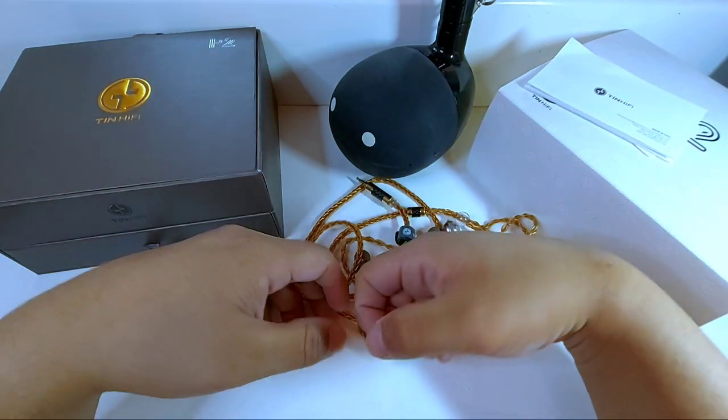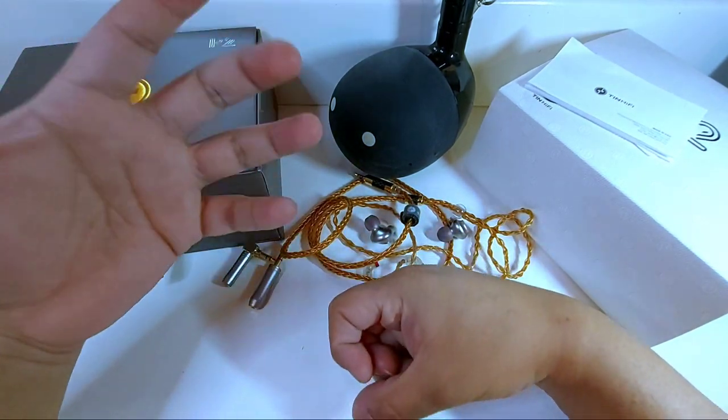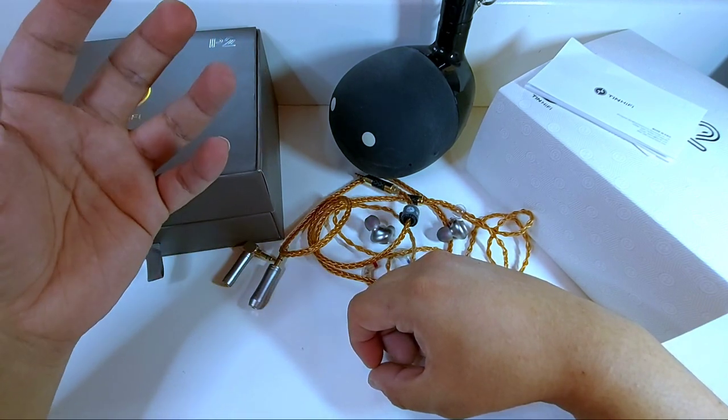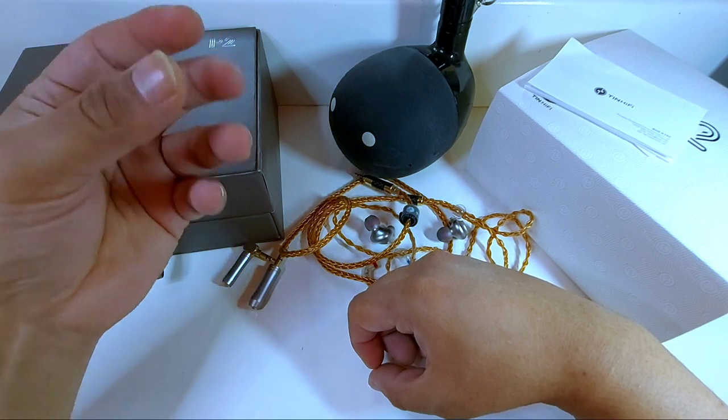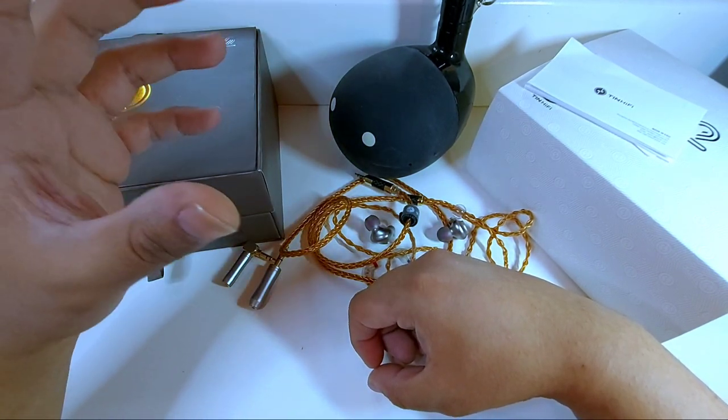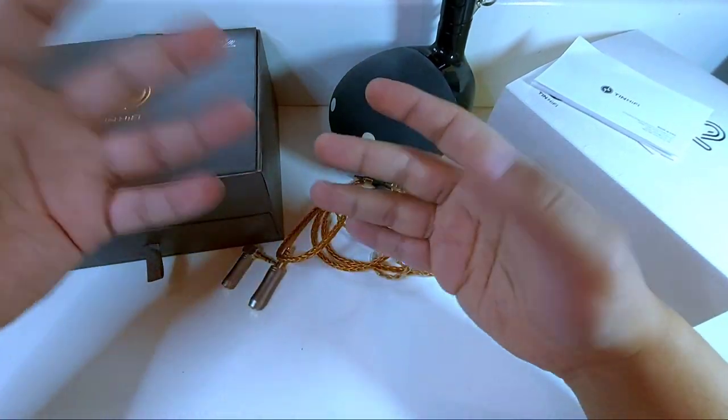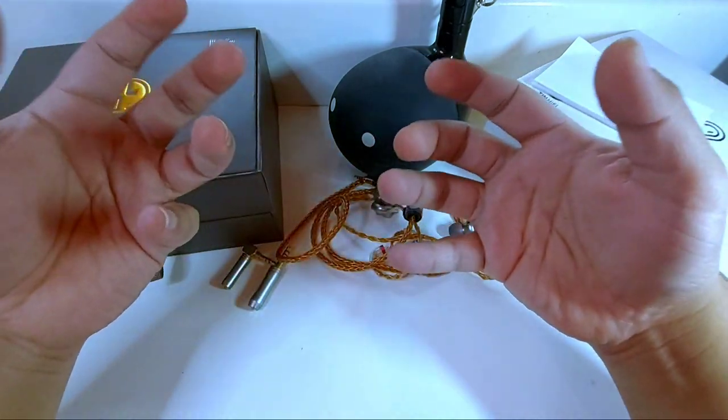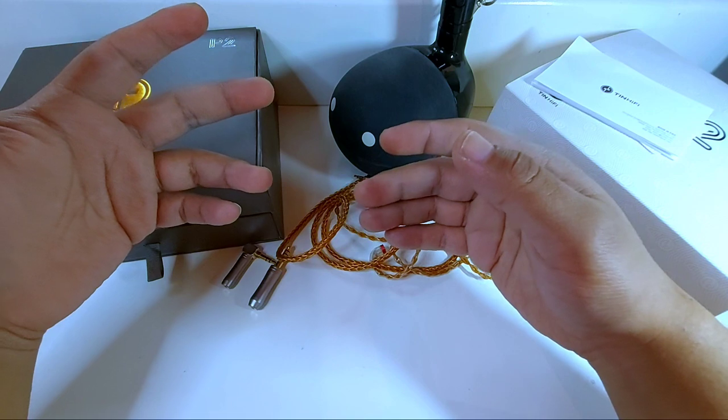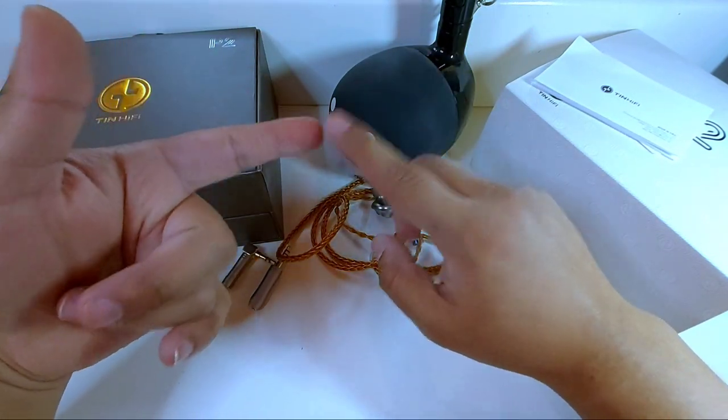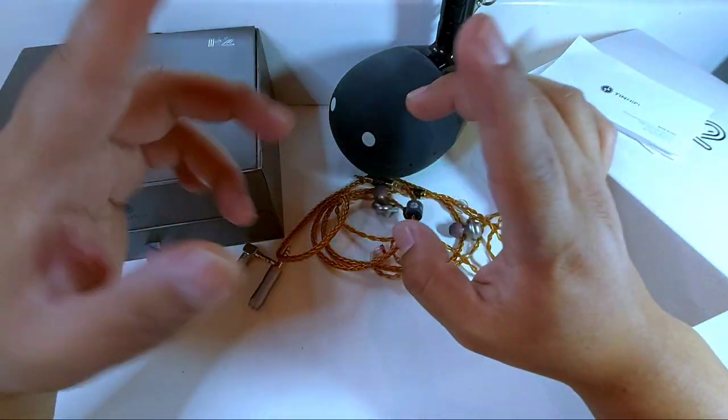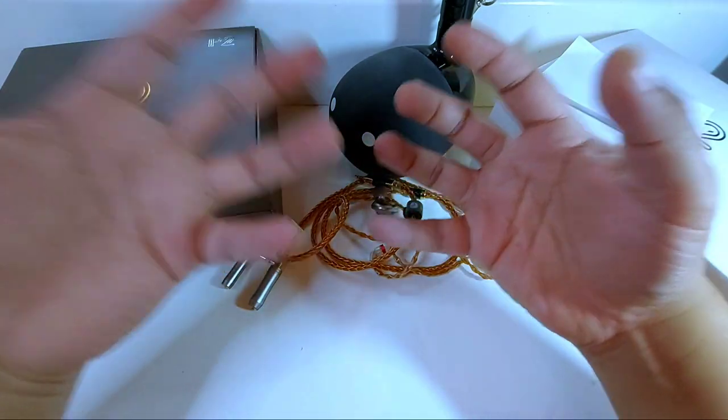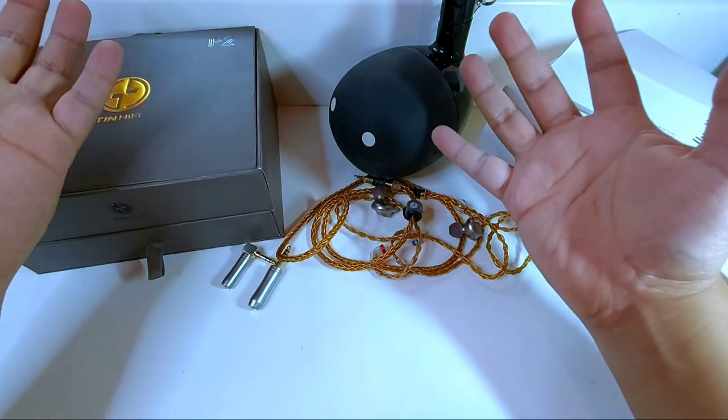En géneros más dinámicos como trap o hip hop, el subbajo inconmensurable resulta muy bien controlado. Hay buena cantidad, buen control y buena calidad. El bajo como tal tiene una pegada y una extensión impresionante. Es un bajo con gran detalle que se va a controlar excelente. Los contrabajos, bajos, chelos, y sobre todo los bombos de las baterías van a tener un excelente trabajo.